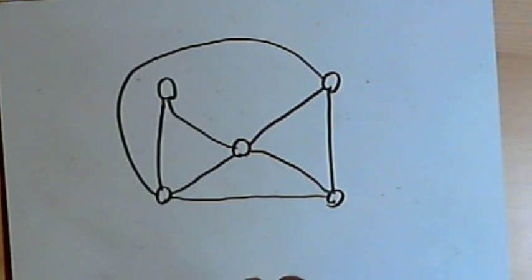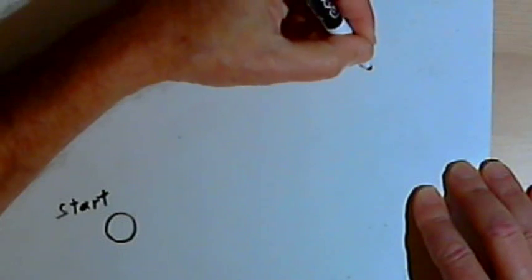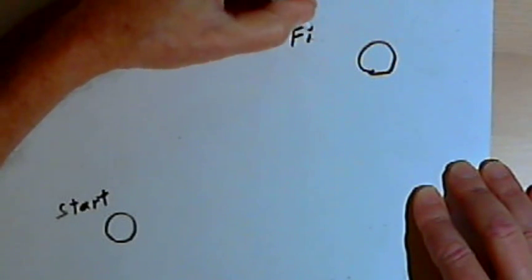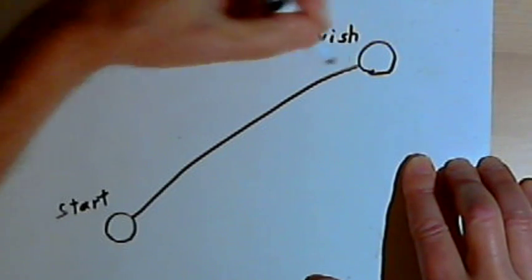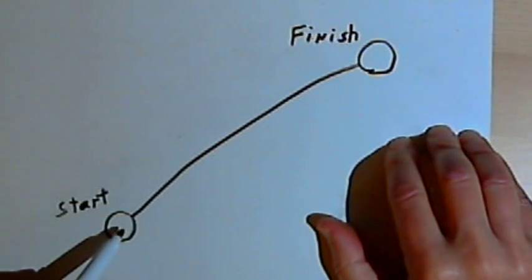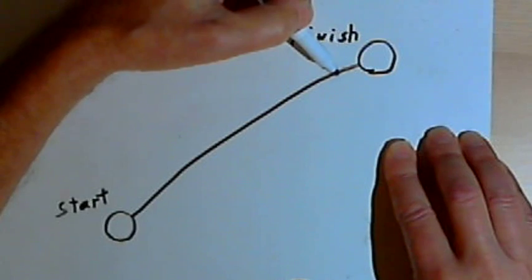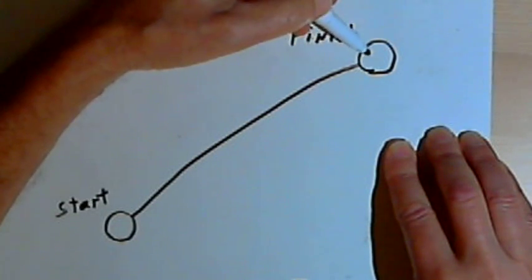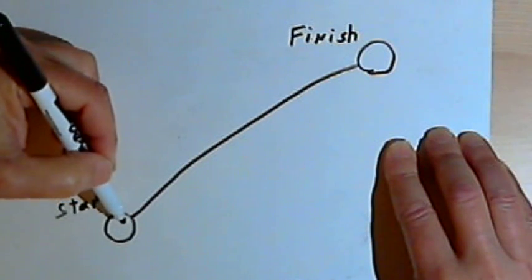To understand this, let's start with a really simple network with an Euler path. I'm going to draw two nodes — a start node and a finish node — and connect them. Now I've got a traversable network, an Euler path. I travel along all of the edges (there's only one edge) and I get to the finish node. It's not an Euler circuit because I didn't get back to where I started, but it is an Euler path.